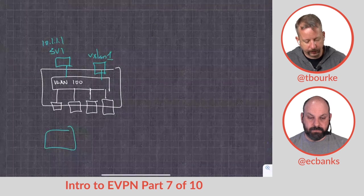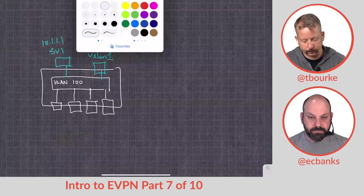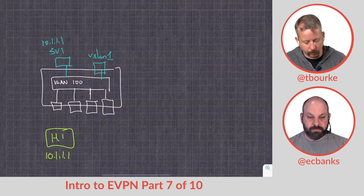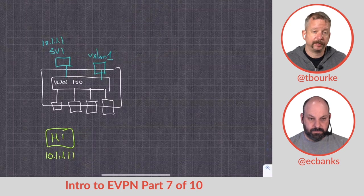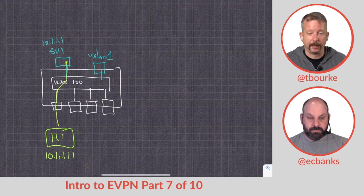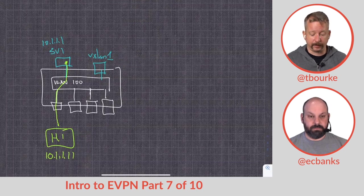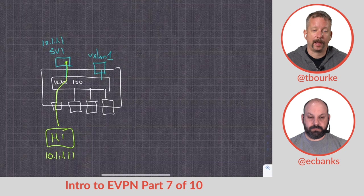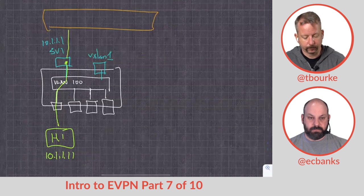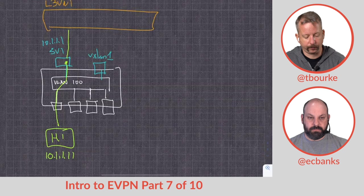So my host, typically green for hosts, 10.1.1.11. When it wants to send a packet to outside of its subnet, outside of its subnet mask, it's got to go to its default gateway. So it sends it up into the SVI. Now, because we don't have the information to get there through the layer two VNI, the MAC VRF just has MAC addresses. We need an IP address. So we need to go to a routing process.